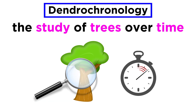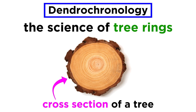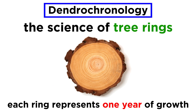So as the study of trees over time, dendrochronology is truly the science of tree rings, which are visible rings of outward growth that can be examined by looking at a cross-section of a tree, with each ring representing one year of growth, proceeding forwards in time from the center outwards.